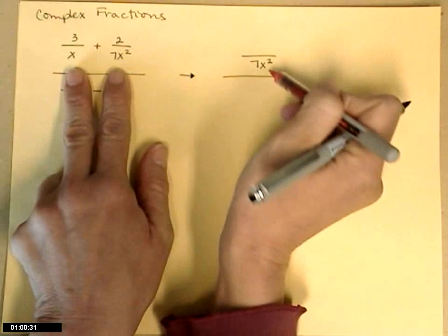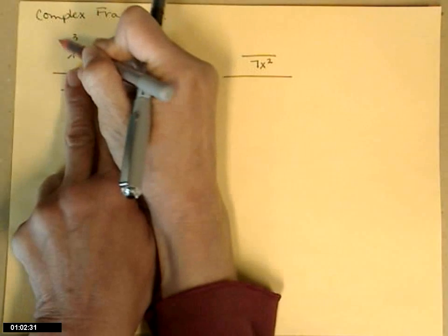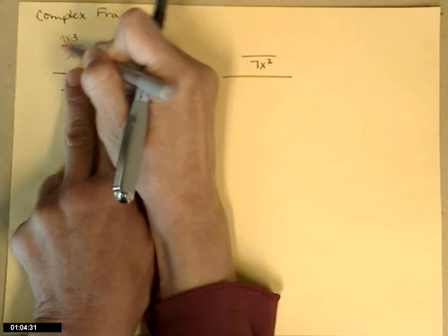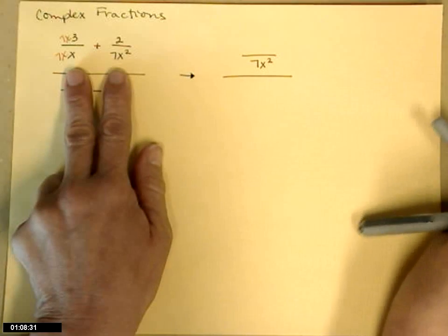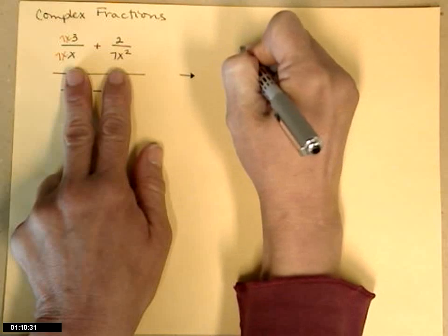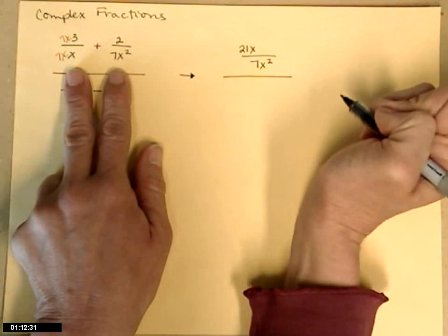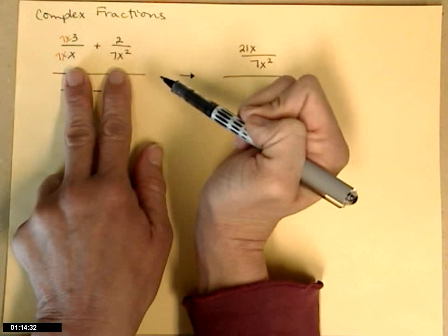So 3 over x, I'm trying to get to 7x squared. That means top and bottom would get multiplied by 7x. So I'll get 21x for the numerator for that first 3 over x.